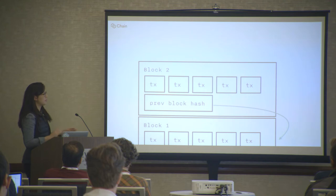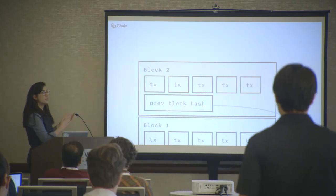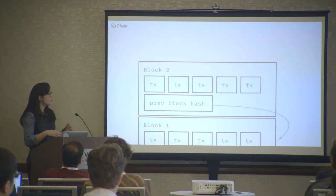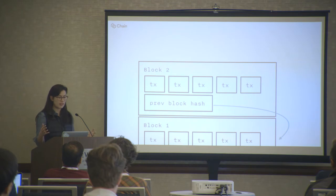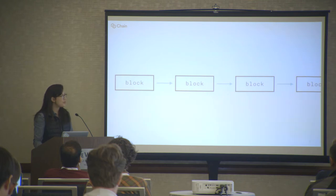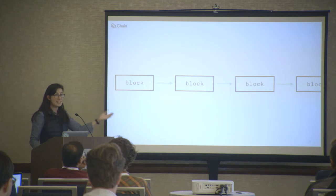So in this simplified diagram, here we have block one, which is full of transactions. And then the block that comes after it, block two, contains a bunch of its own transactions in addition to the hash of the data in the previous block. And as more transactions happen across the network, they get grouped into a new block, block three, which also contains the hash of block two. So this block gets appended to the ledger. You end up with this long chain of blocks, and each block points to its previous block by including that block's hash. And this blockchain is that ledger.